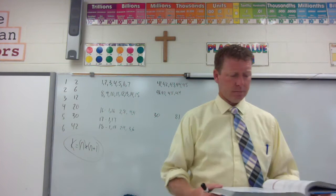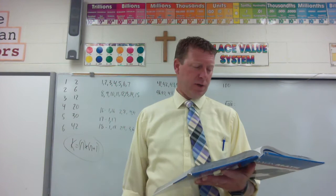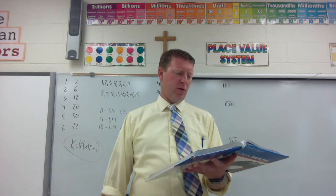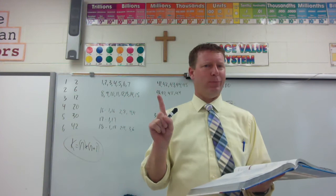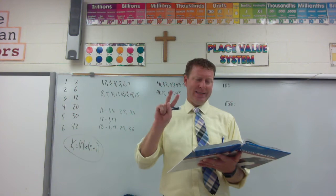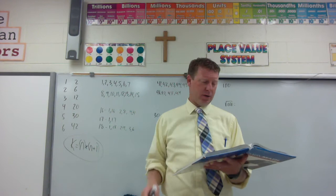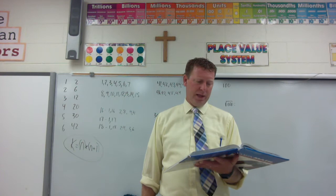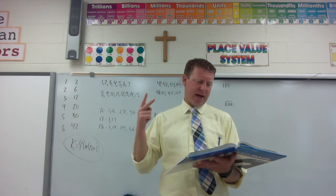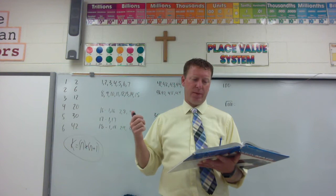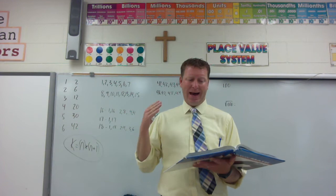The counting numbers, also called natural numbers, are the numbers we use to count — 1, 2, 3, and so on. Counting numbers greater than 1 are either called prime numbers or composite numbers. Notice: greater than 1. 1 is not prime and 1 is not composite. A prime number has exactly two different factors — that's why 1 is not prime, because its factors are 1 and 1, which is the same number. A composite number has three or more factors. From the table, numbers 2, 3, 5, and 7 have exactly two factors, so they're prime. A prime number is a counting number greater than 1 whose only factors are 1 and the number itself.